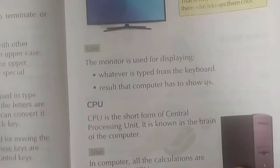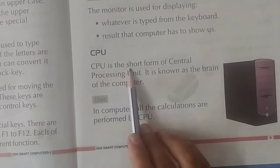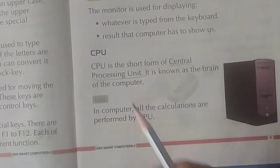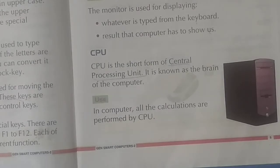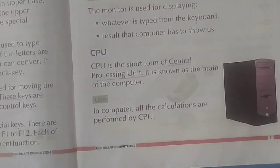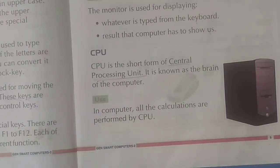Now next is CPU. What is the full form of CPU? CPU is the short form of Central Processing Unit. The word CPU is formed by taking the first letters of Central Processing Unit. It is known as the brain of the computer. Which is the brain of the computer? CPU. If there is no CPU, then the computer will not work either, because without the brain, no work can be done. File storage, mic settings, and many other things are connected to the computer's CPU.